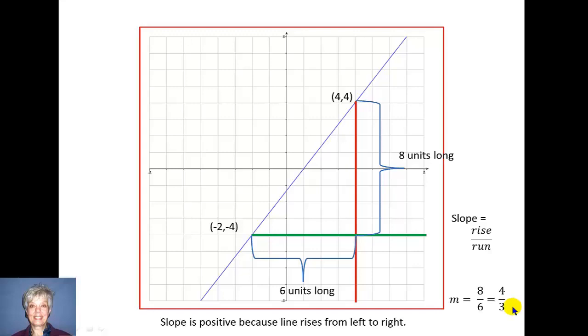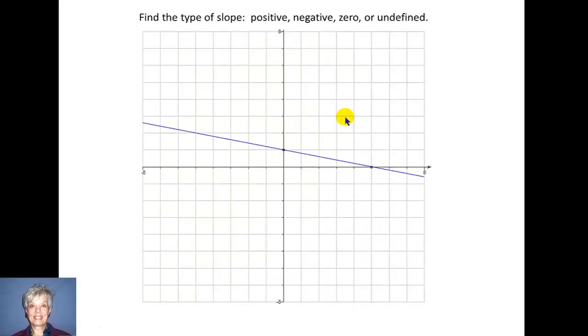Not 4/3 x, just 4/3. Slope is always a pure number. And we know that the slope is positive 4/3 because this line rises from left to right. It goes up from left to right. Another way of looking at it is this line tilts over to the right.